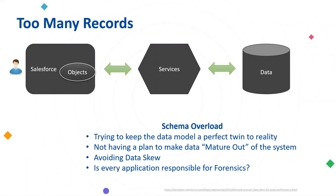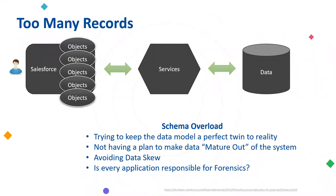One of the design skews we'll zoom in on is too many records. Salesforce has started to make acquisitions and suggest reference enterprise architectures around implementation at large scales. Salesforce does what it does very well, but everyone has had a need to reach out to some other service or application or data source to bring in context. Schema overload and record overload are two big ways you can hit design skew issues — by trying to keep a perfect twin with reality or not having a plan to mature data out of the system.